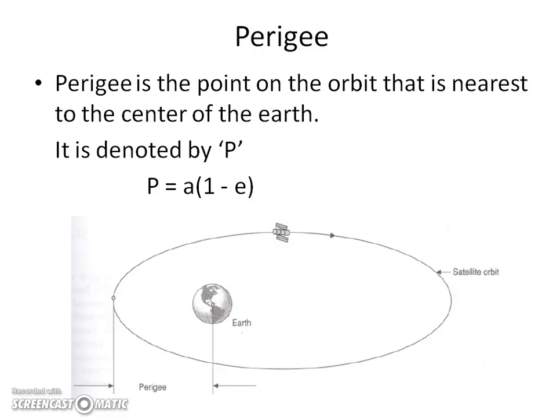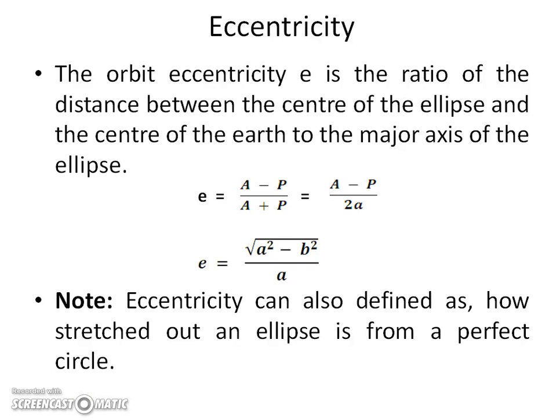Next is perigee — the point on the orbit that is nearest to the center of the earth. It is denoted by capital P. You can see in this diagram the elliptical-shaped orbit centered on the earth, with the satellite revolving around it. The expression for perigee is P = a(1 − e), where a is the semi-major axis and e is the eccentricity of the ellipse.